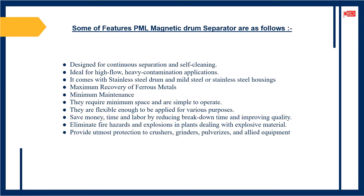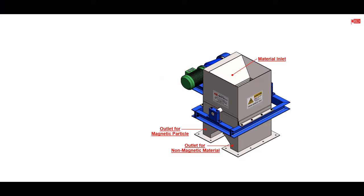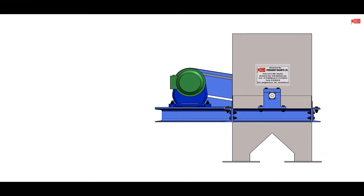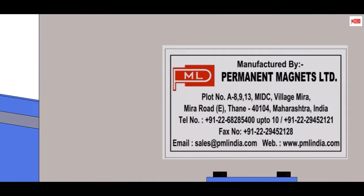Some of the features of PML magnetic drum separator are as follows. The magnetic drum filters out iron contamination and hence is widely used in all the processing industry.